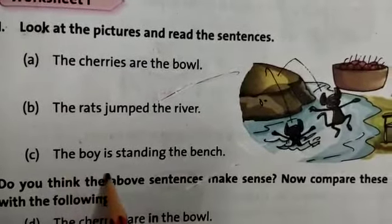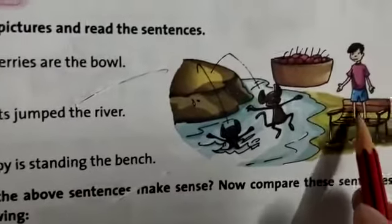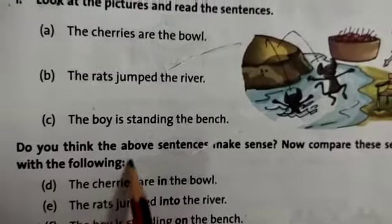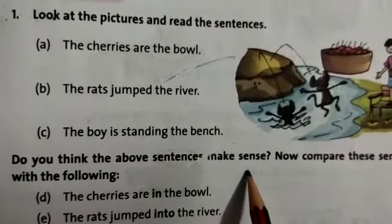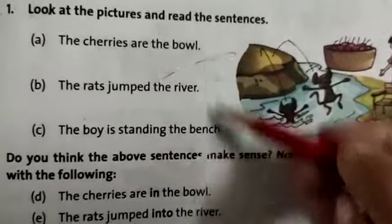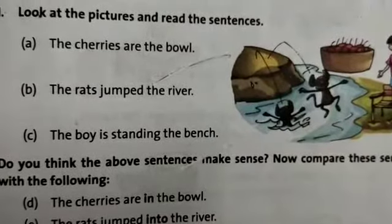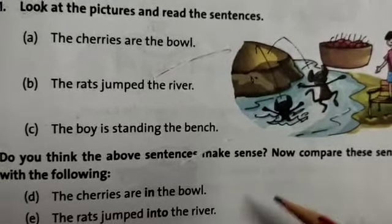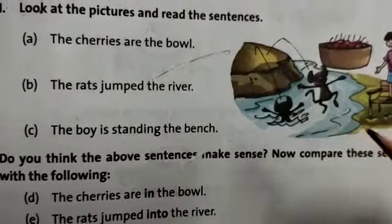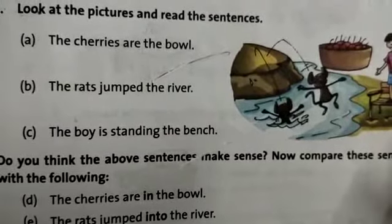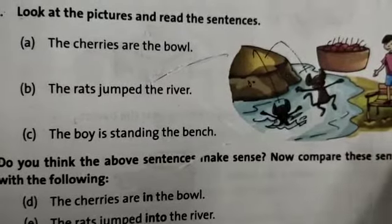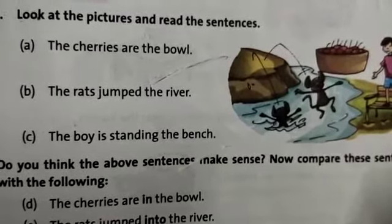Number two: the boy is tending the bench. You can see here, this boy is tending the bench. Now, do you think the above sentences make sense? The cherries are the ball. The rats jump the river. The boy is tending the bench.